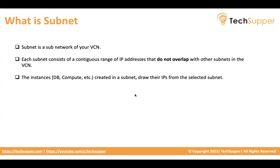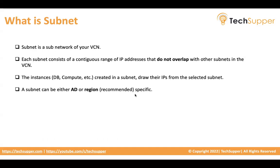Instances — like your database instance, compute instance, API gateway instance, or any other instance — must be placed in a subnet. Without a subnet you cannot create a resource. Most resources in OCI are VCN-specific, and when you create resources the IPs of those resources will be drawn from the selected subnet. A subnet you create can be availability-domain-specific or regional, but Oracle recommends using regional subnets.